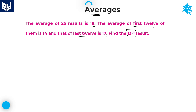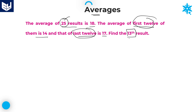According to the given information, total 25 results are there. Out of that, he is talking about first 12 and last 12 — that means total 24 results. But according to the question, total 25 results are there. That missing result is nothing but the 13th result.